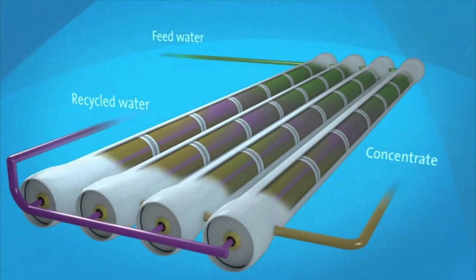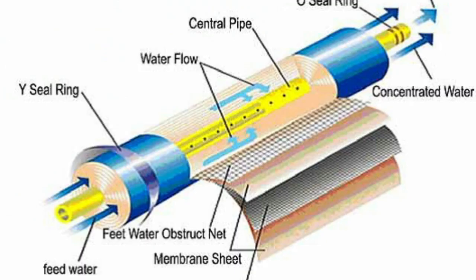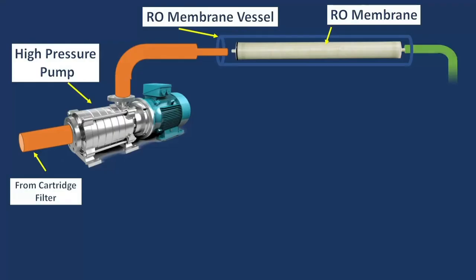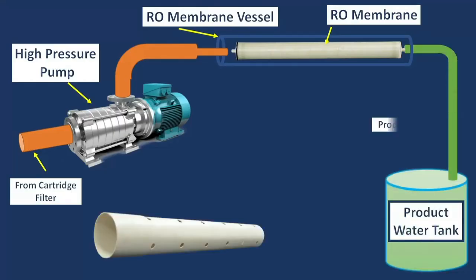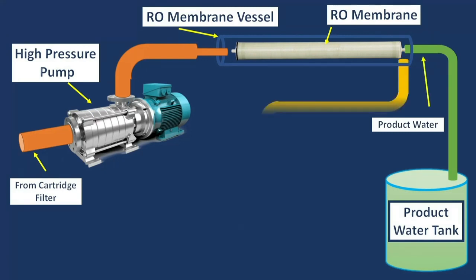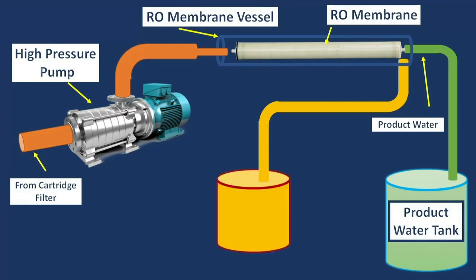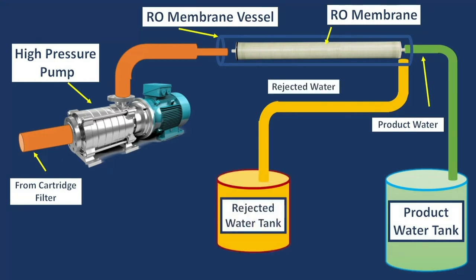Water enters from the inlet point and flows on the surface of the membrane. The filtered or product water is collected in a perforated pipe inserted in the center of the membrane. The remaining high-salts concentrated water is collected from the reject line. This filtered or product water is also called permeate water.